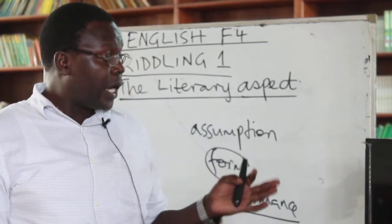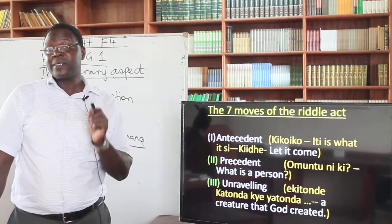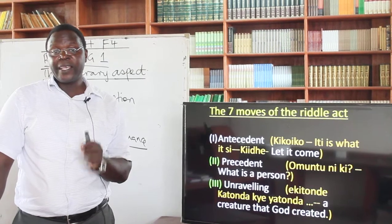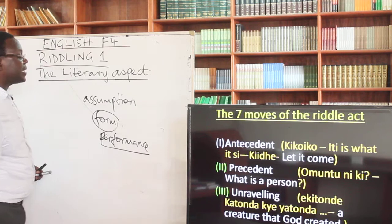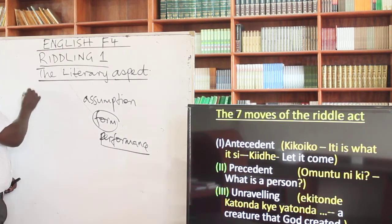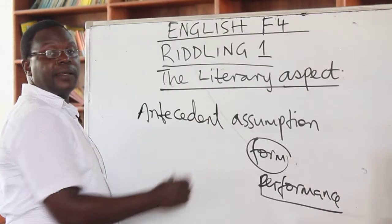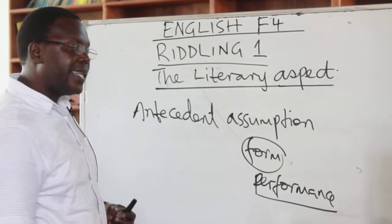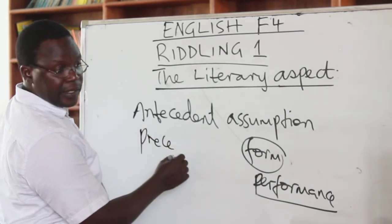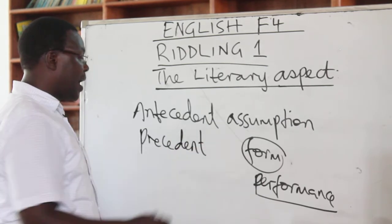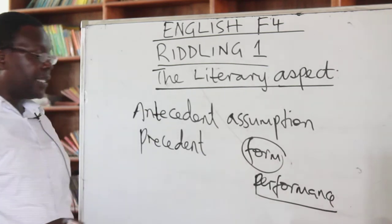I want you to look at the seven moves of the riddling act. There are terms I want you to pay keen interest on. The first is the antecedent. The second one is the precedent.